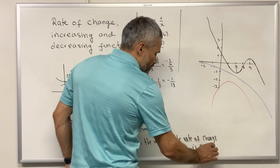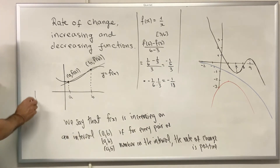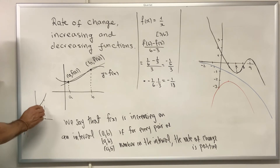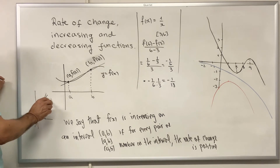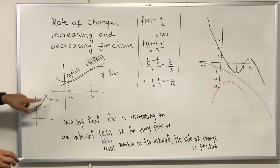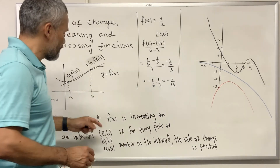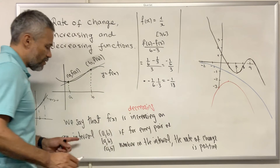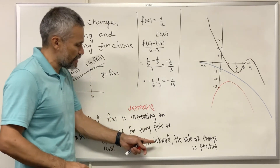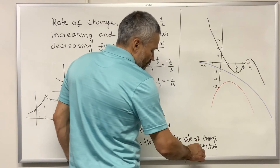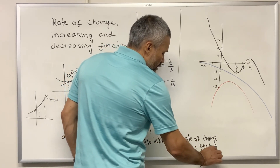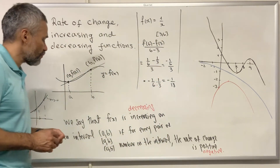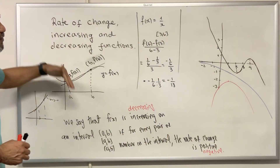Increasing means that if we pick two points in the domain and we consider the slope of the line that connects these two outputs, this slope is positive — that means the function is always going up. We say that the function is decreasing on an interval if for every pair of numbers in the interval the rate of change is negative, meaning the function is going down.